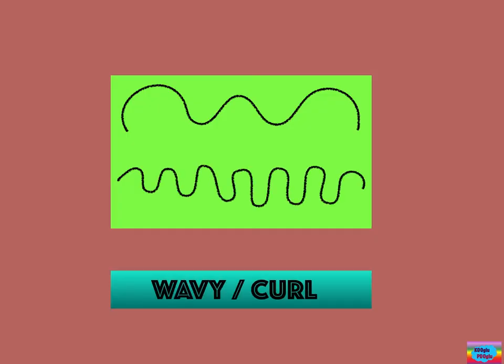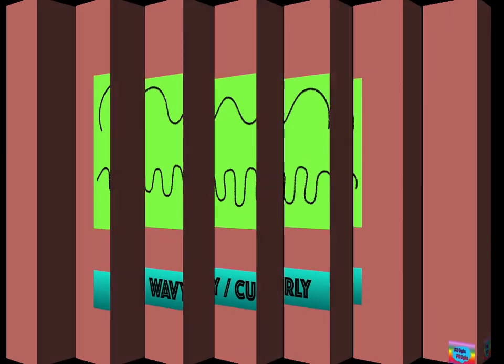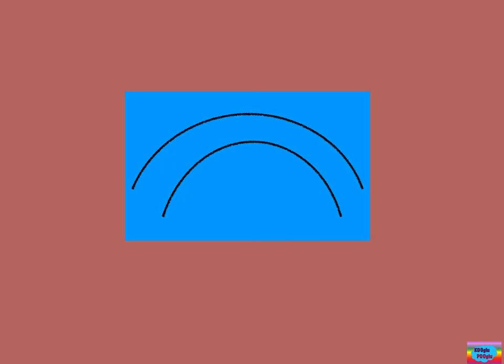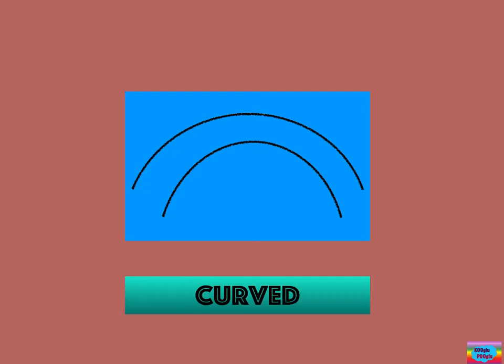This is called a wavy and curly line. We can use this to make a bucket of slime. This is called a curved line. We use these to make a beautiful rainbow.